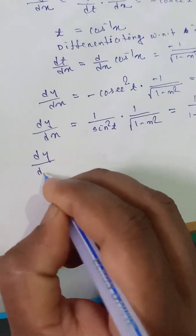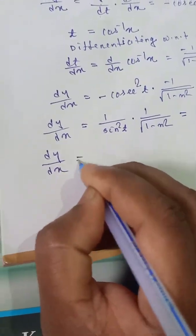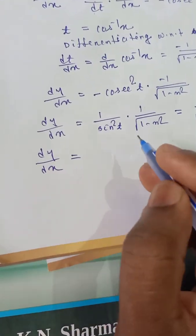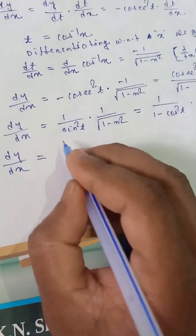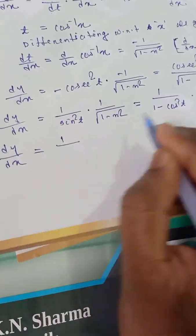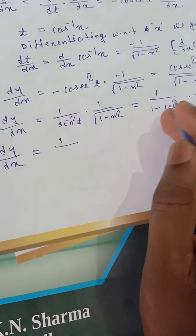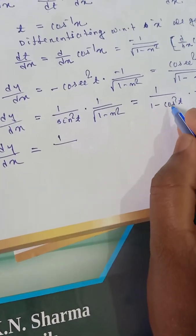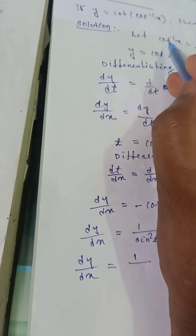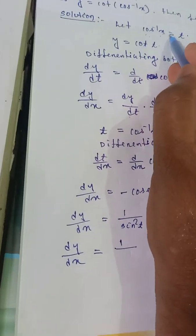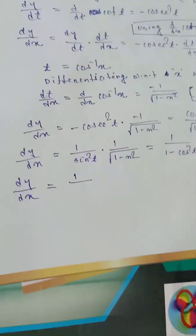So dy by dx is equal to 1 divided by sin squared t into square root of 1 minus x squared. Now 1 minus cos squared t — and since cos inverse x equals t, we have cos t equals x, so sin squared t equals 1 minus x squared.